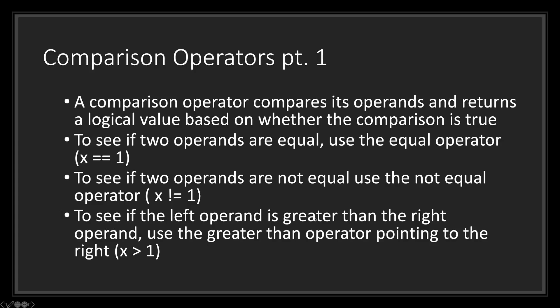To see if the left operand is greater than the right operand, use the greater than operator pointing to the right. You want to see if the left operand x is greater than the right operand number one. If x were two, then this will return true. Now if x is equal to one or any other number that is less than one, this operator will return false.